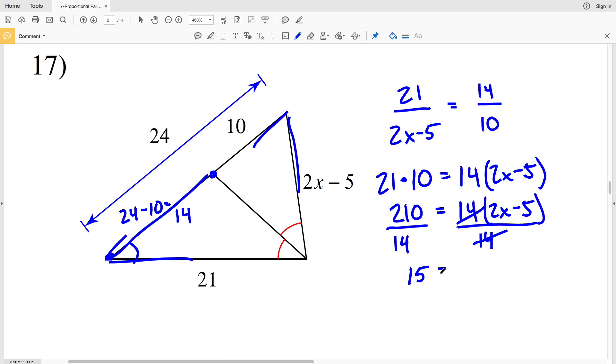Adding 5 to both sides will help me isolate my term with the X, so 2x will be by itself, and that will be equal to 20. So when I divide by 2, 20 divided by 2 is 10, so 10 equals X in number 17.